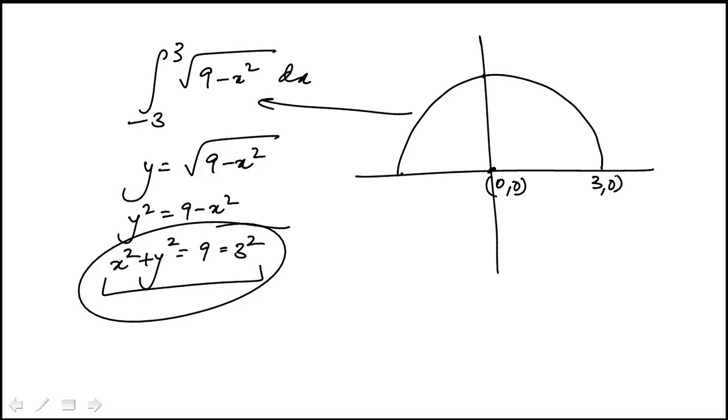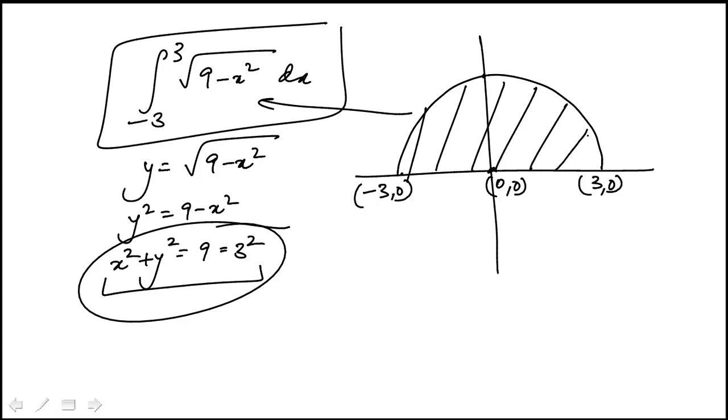So these endpoints are 3, 0, minus 3, 0. So they're really asking, this question is asking for the area under this curve, or half circle, and the endpoints are the points on the x-axis.